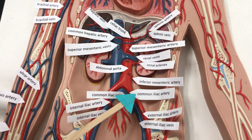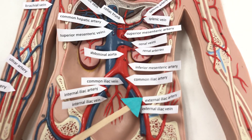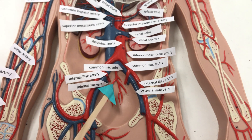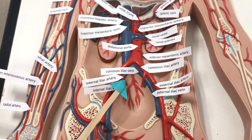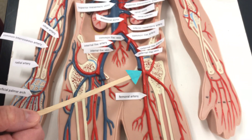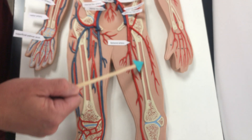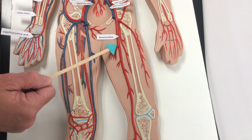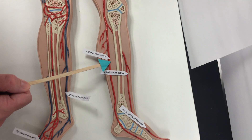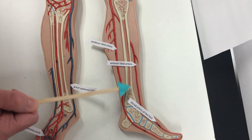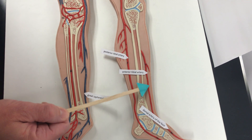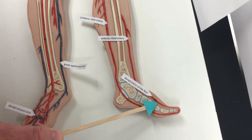We have the common iliac artery and common iliac vein, the external iliac artery and external iliac vein, and the internal iliac artery and internal iliac vein. Going down the leg, we have the femoral artery — named for the femur — still carrying oxygenated blood away from the heart. Then we have the posterior tibial artery behind the tibia, the anterior tibial artery on the front side of the tibia, and the dorsal artery of the foot.